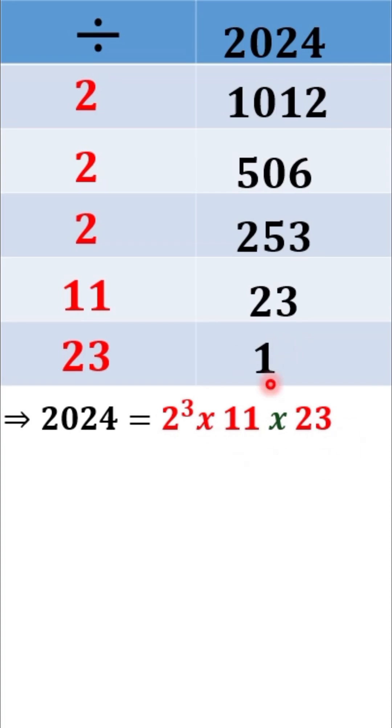This means that 2024 can be written as 2 to the power 3 times 11 times 23, which you can see as 2 to the power 3, 11 to the power 1, 23 to the power 1.